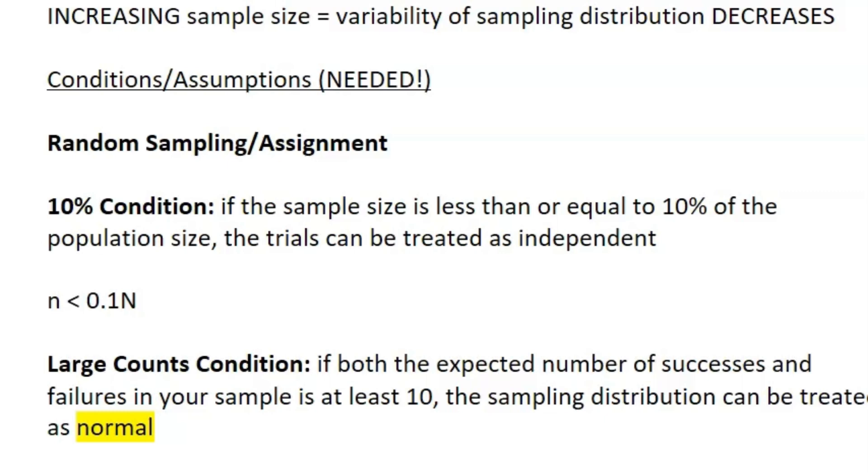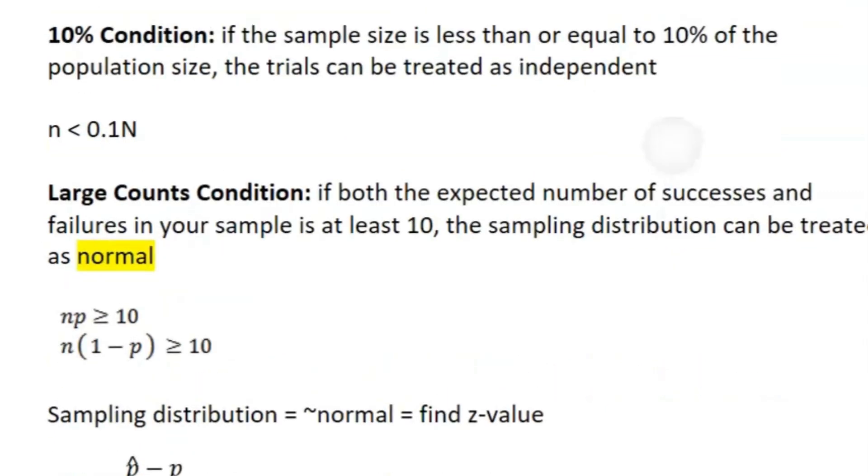Then you need to satisfy the 10% condition, where each sample you take has to be less than or equal to 10% because you want the trials to be treated as independent. That is represented as n is less than 0.1 or 10% of the entire population, which is denoted as big N.